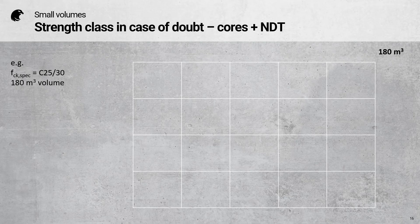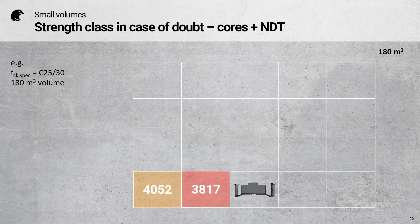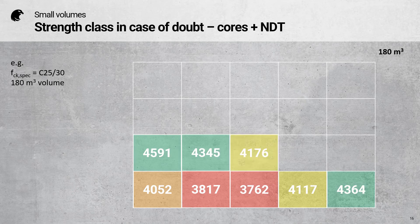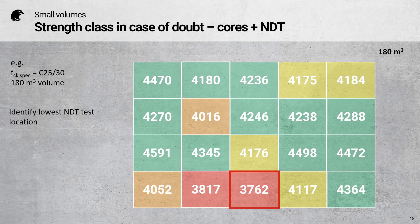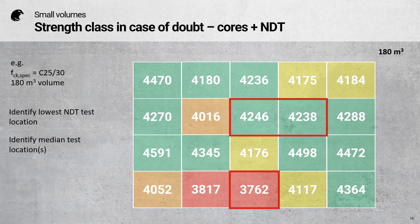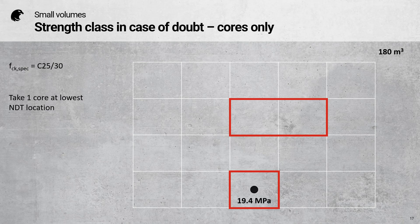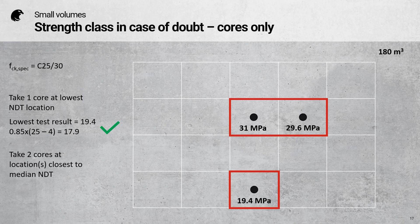Once again, I have a 180 cubic metre volume test region and a specified C25/30 concrete which I would like to confirm. My first step is to do an NDT survey — in this case a pulse velocity survey — and I need 20 test results for this volume. Once that's completed, I identify the lowest NDT test location and the median test location. I take one core at the lowest NDT location and do the calculation to see if it satisfies the criterion. Then I take two cores at the lowest NDT location, plus two cores at the location closest to the median NDT location. I calculate the mean of these cores and check if it satisfies the criterion. If both criteria are satisfied, I can confirm that the concrete is C25/30.